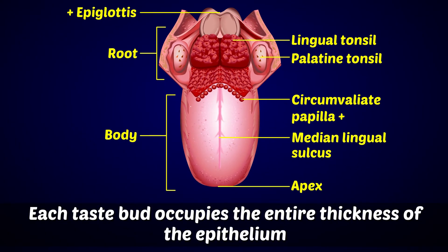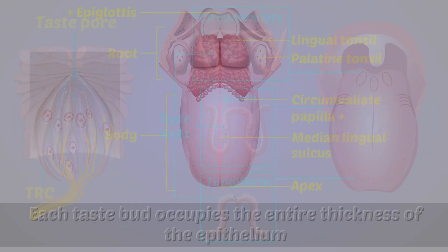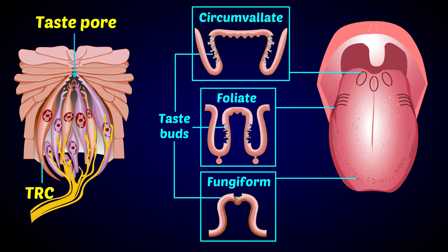Each taste bud occupies the entire thickness of the epithelium. There is an opening on its surface known as the pore canal.